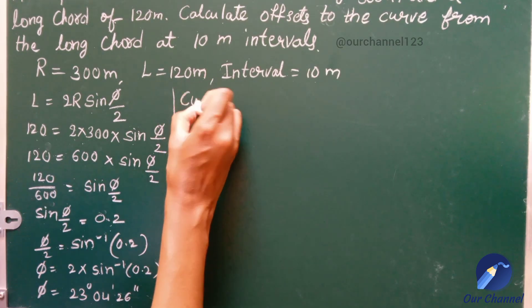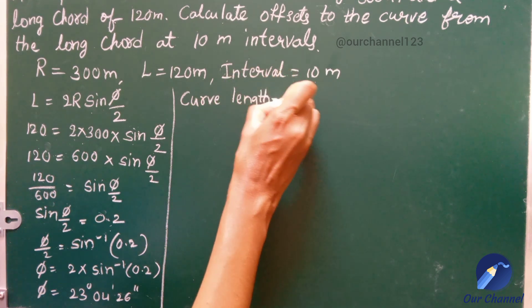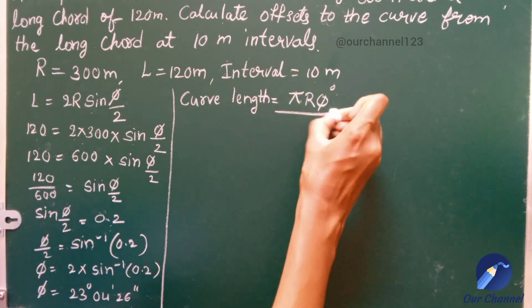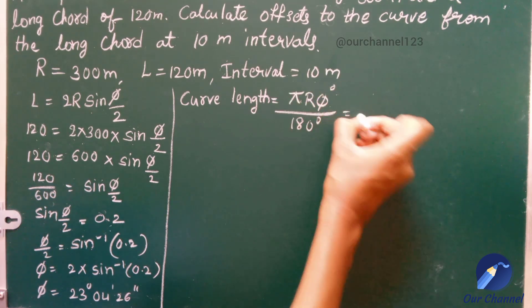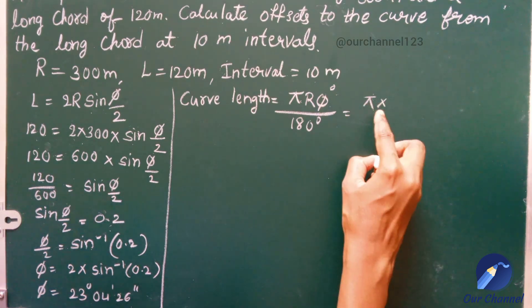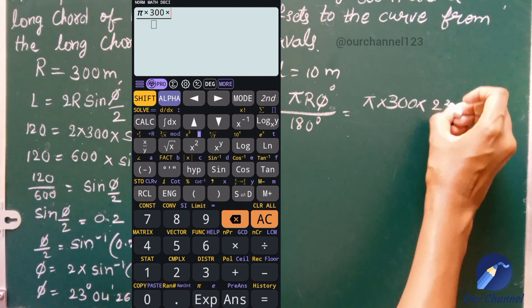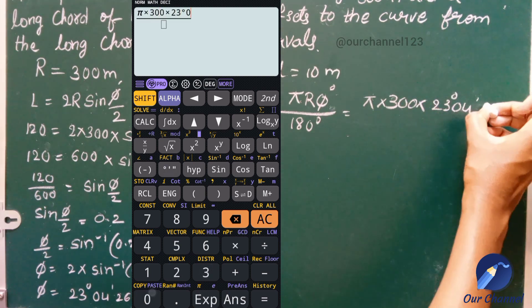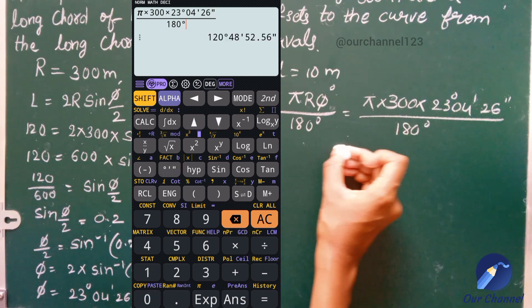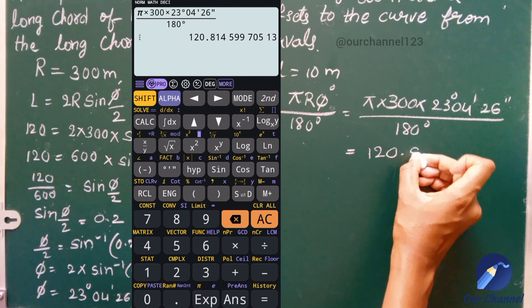Now we should calculate the length of the curve. That is curve length is equal to πRθ degrees by 180 degrees. On substituting the values: π into 300 into 23 degrees 4 minutes 26 seconds divided by 180 degrees we will get the answer as 120.815 meters.